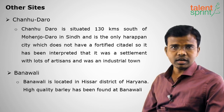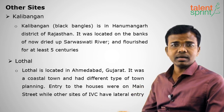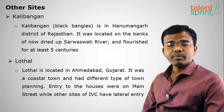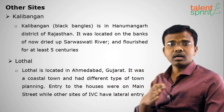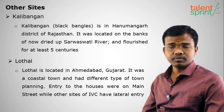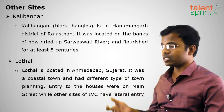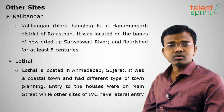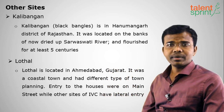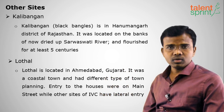Moving on to Kali Bangan — 'Kali Bangan' means black bangles, which were excavated from this site in Rajasthan. It was situated on the banks of the river Saraswati, which has since dried up. We know of the Triveni Sangam — Ganga, Yamuna, and Saraswati — meeting at Allahabad in Uttar Pradesh, but today only the Ganga and Yamuna rivers exist.